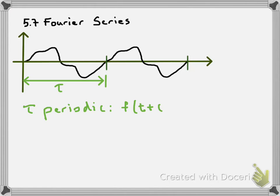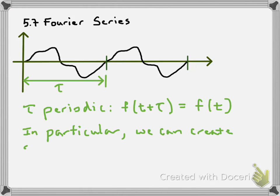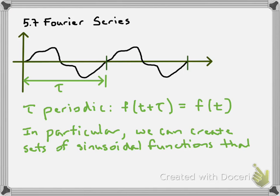This means that if I advance the argument by an amount tau, the function is equal to what it was before I advanced it by tau. In particular, I can create sets of functions that are tau periodic.